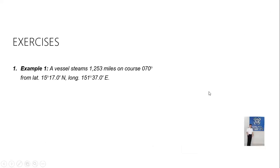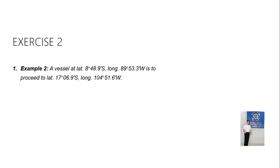Here is your exercise. Exercise one: a vessel steams 1,253 nautical miles on course 070 from a given latitude and longitude. Course and distance plus latitude and longitude A are given — you have to determine latitude B and longitude B. Exercise two: a vessel at a given latitude and longitude is to proceed to latitude B — you have to determine course and distance.